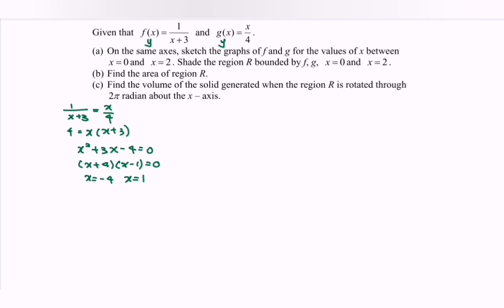Now substitute the x values to find y. If x = -4, then y = -1. If x = 1, then y = 1/4. So the intersection points are (-4, -1) and (1, 1/4).